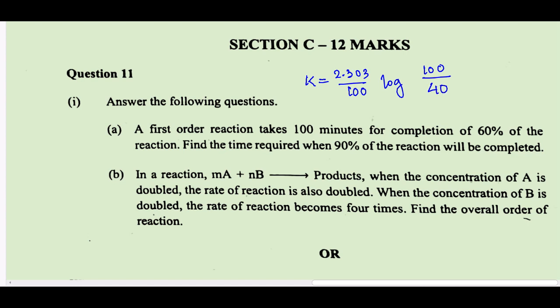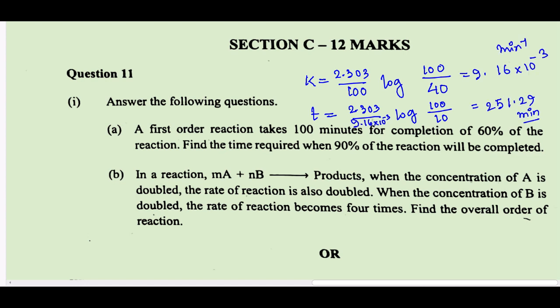After putting the value of k in 2.303/k × log(100/10) — because 90% is completed, 10% remains — after calculating, the answer is 251.29 minutes. If you get a different answer or a different method, do comment below. But first concentrate on your next exam, then check the answers.